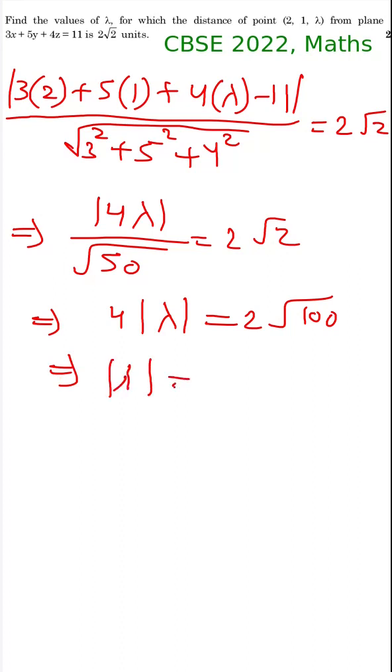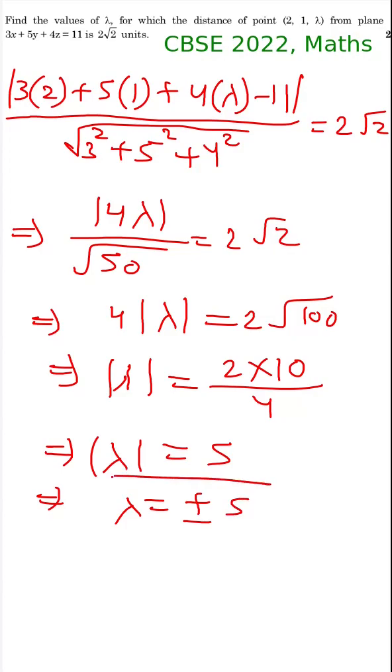So from here you can write |λ| equals 2 times 10 divided by 4. From here |λ| equals 5, or λ equals plus or minus 5. That's the answer.